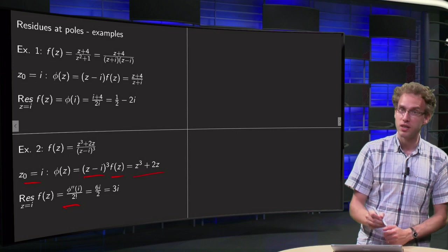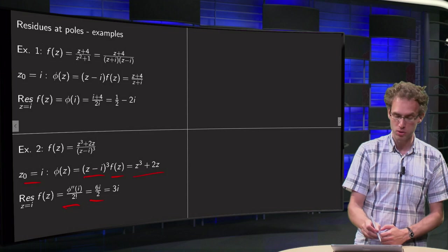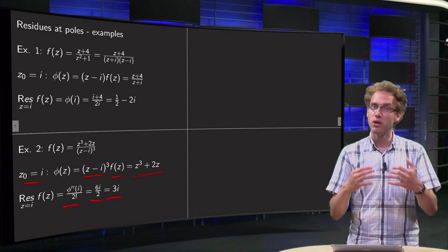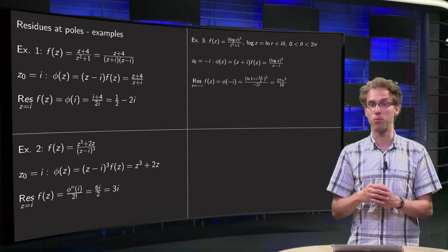Our residue becomes 6 times z divided by 2 factorial. If i equals 6i divided by 2 equals 3i. There we have our residue at i from our third order pole.